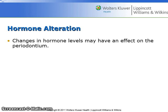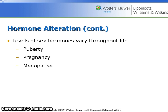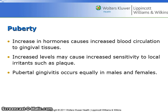Changes in hormone levels may have an effect on the periodontium. Levels of sex hormones vary throughout life, especially in puberty, pregnancy, and menopause. In puberty, an increase in hormones causes increased blood circulation to gingival tissues, which may cause increased sensitivity to local irritants such as plaque. Pubertal gingivitis occurs equally in males and females.